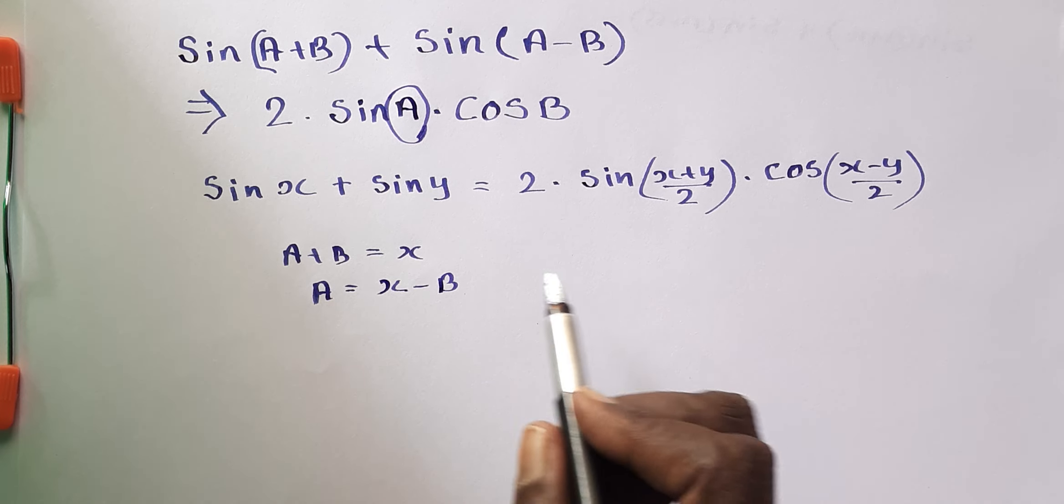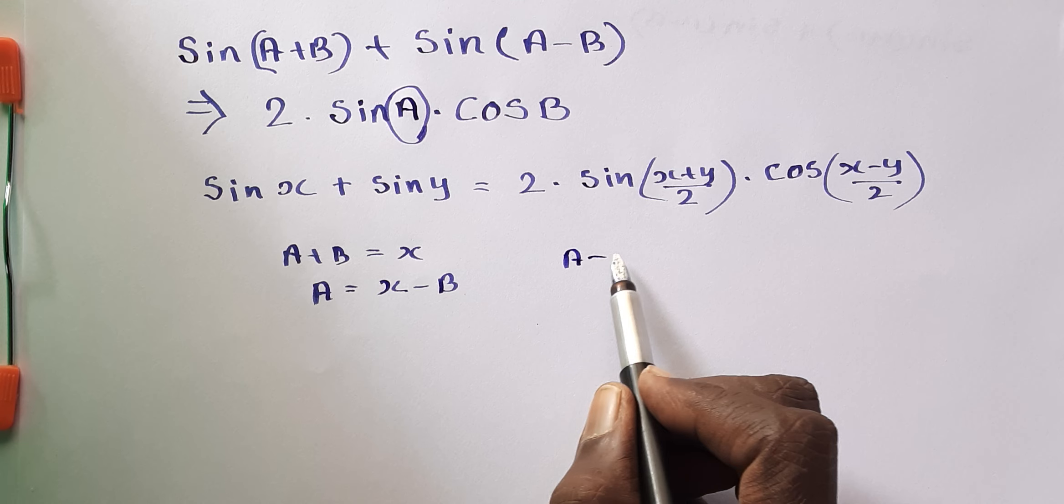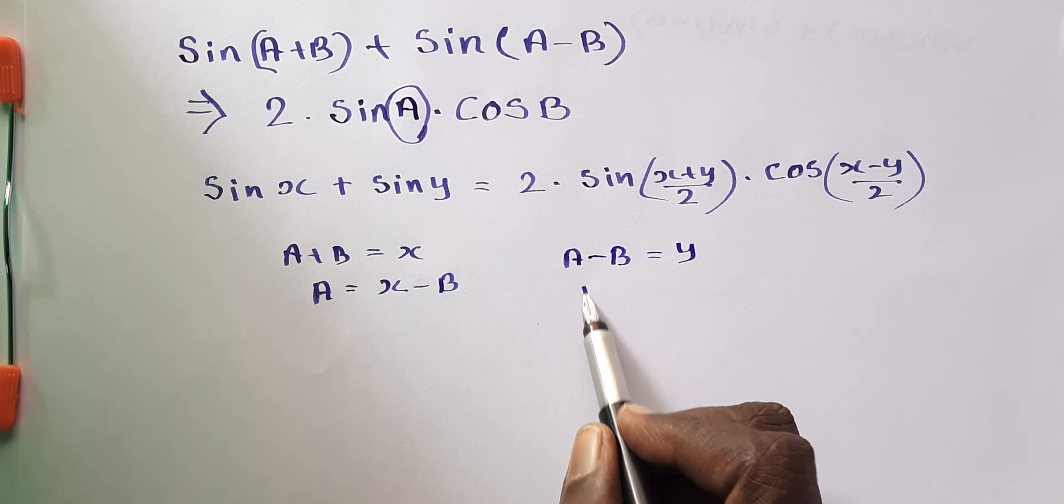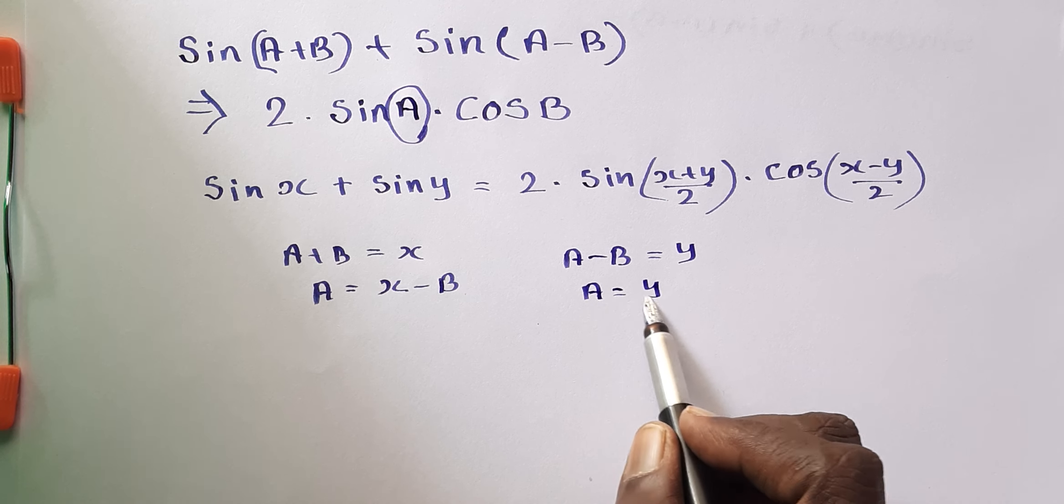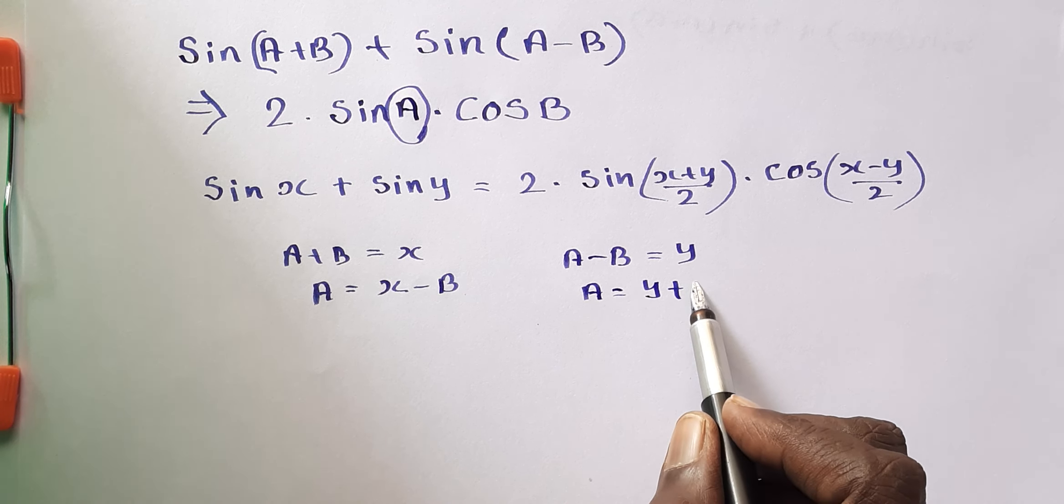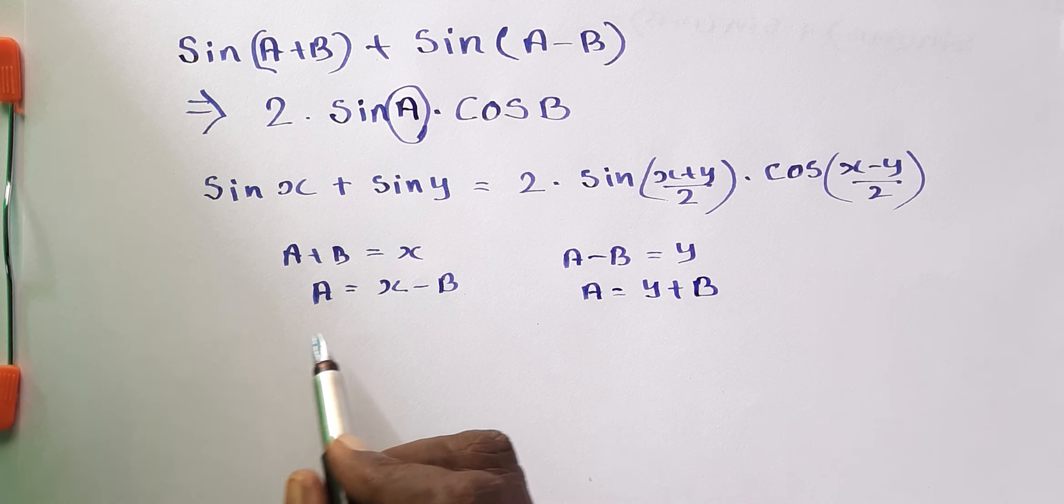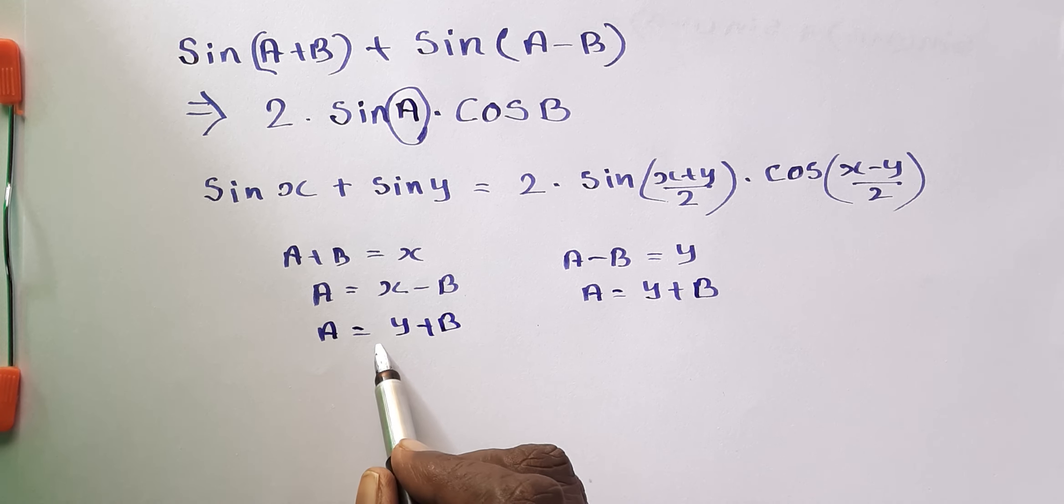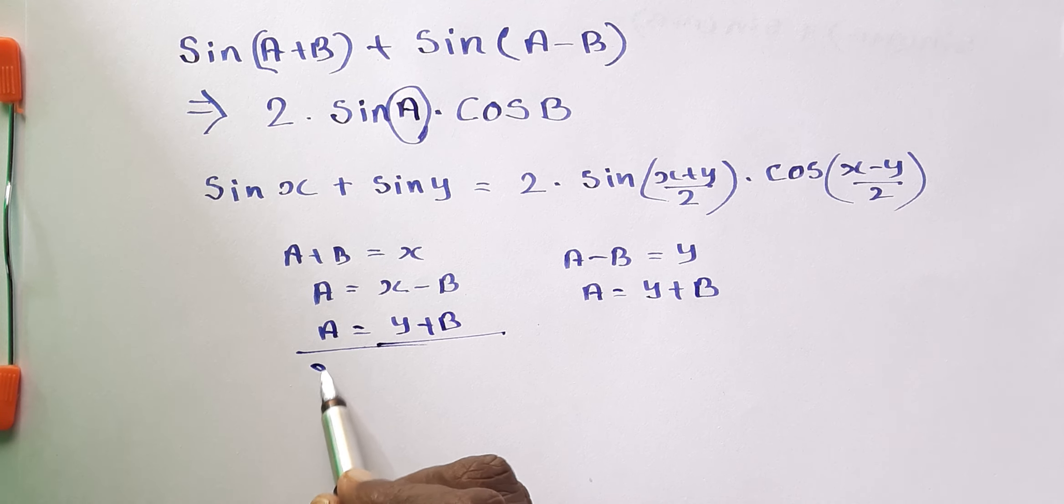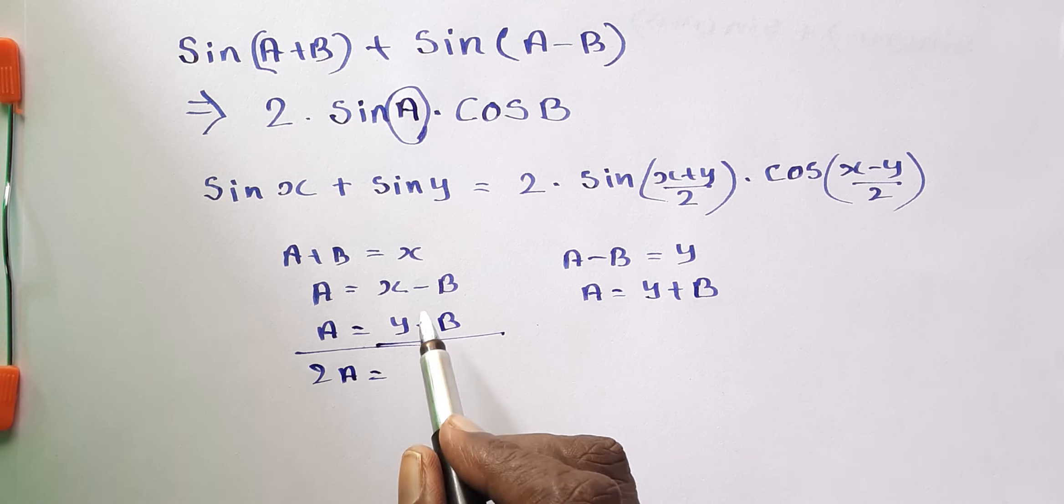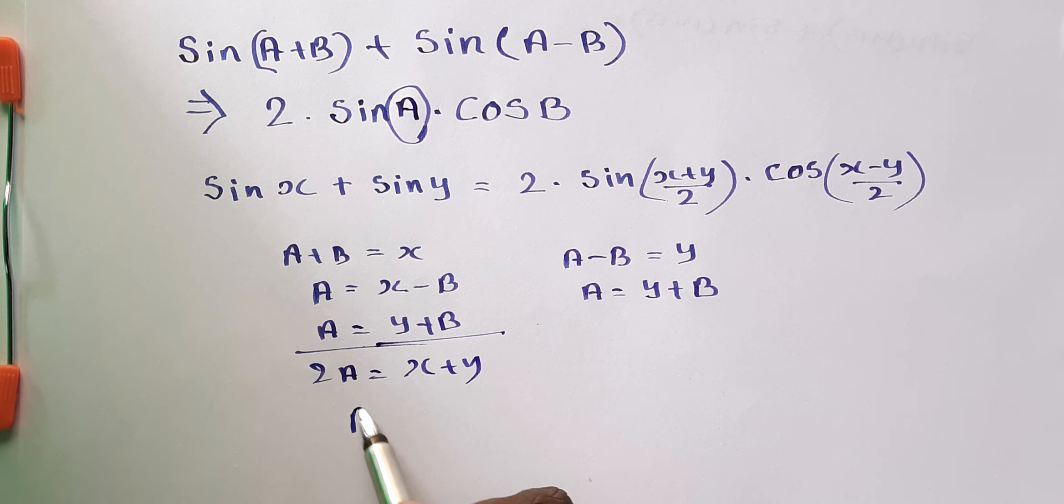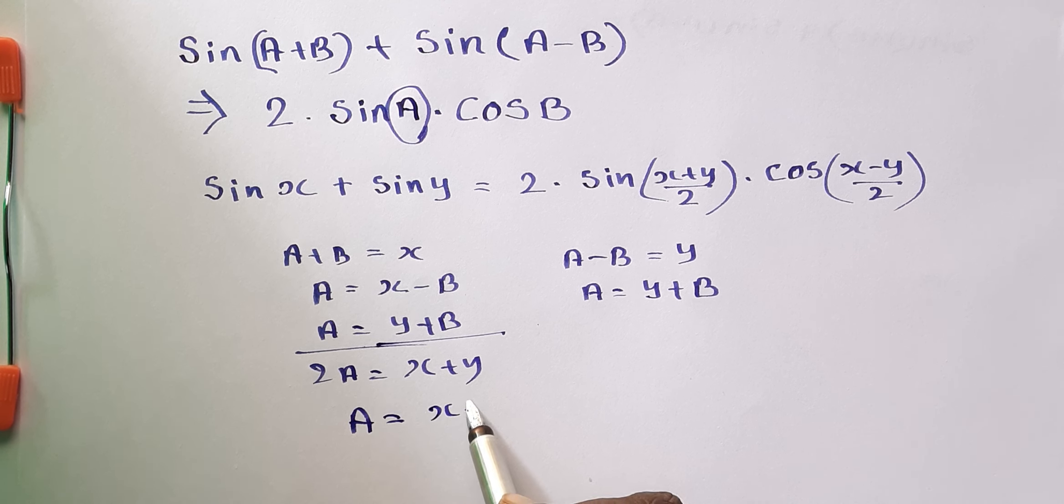Then after, from A minus B is equal to Y, A is equal to Y plus B. A is equal to Y plus B. From them, 2A is equal to what comes there, X plus Y. So A is equal to X plus Y by 2. OK, we may substitute this value only there.